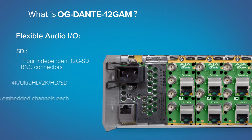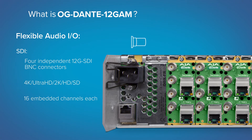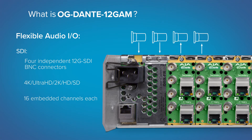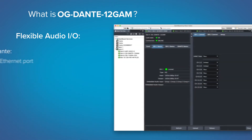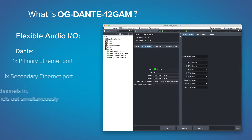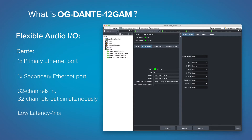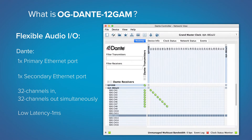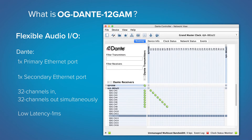Each OG Dante 12GAM card provides four 12G SDI ports for single cable support of 4K through SD video in and out, and up to 16 channels of embedded audio support per SDI connection. Audio can be bridged, mapped, and embedded from Dante sources into each SDI stream, or disembedded from SDI and served to Dante destinations.